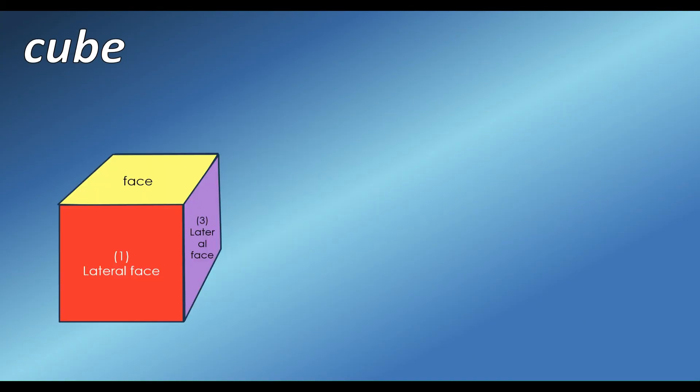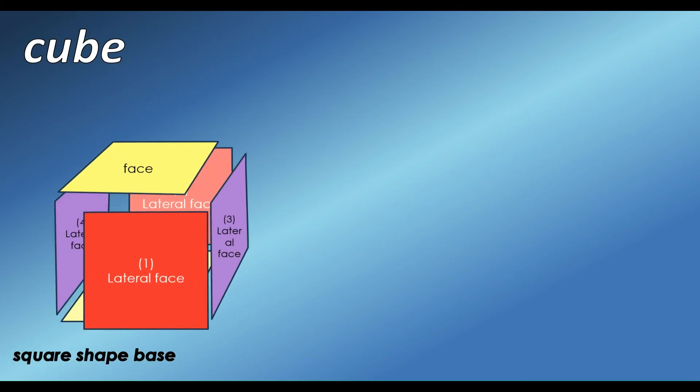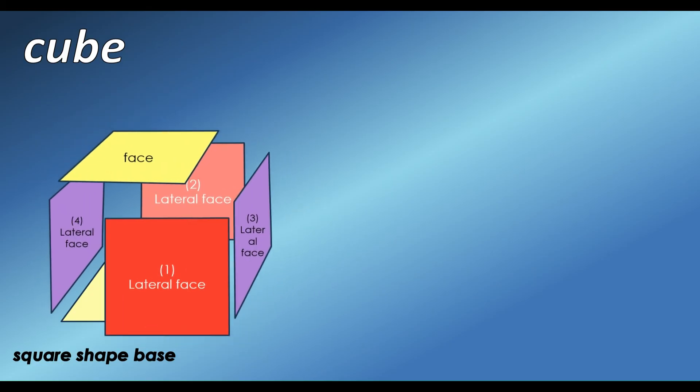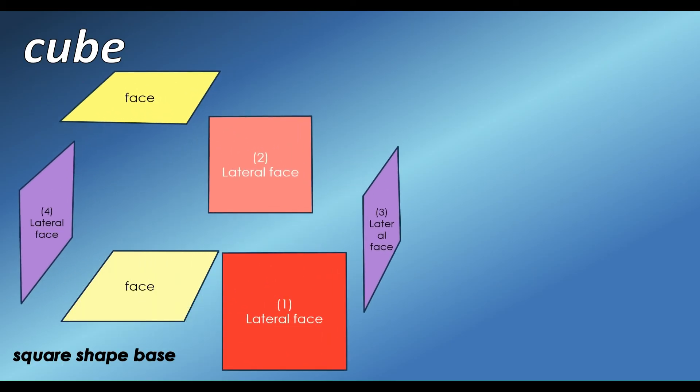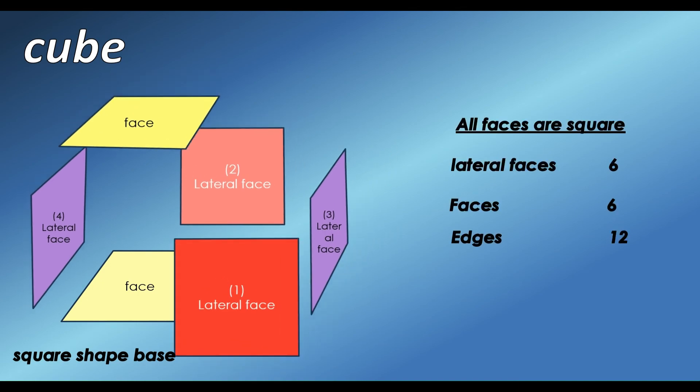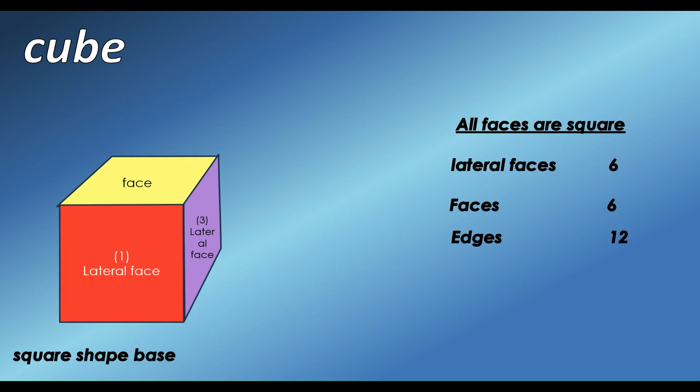A cube is a prism with a square base and all its faces are square, with 4 lateral faces. Let's visualize the dimensions of the cube. All faces of a cube are square and have 6 lateral faces. Cube has 6 faces and 12 edges.